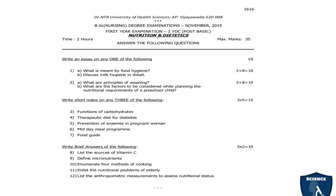Brief answers (2 marks each, 5 questions): list the sources of vitamin C; define micronutrients; enumerate 4 methods of cooking; enlist the nutritional problems of elderly; list the anthropometric measurements to assess the nutritional status.